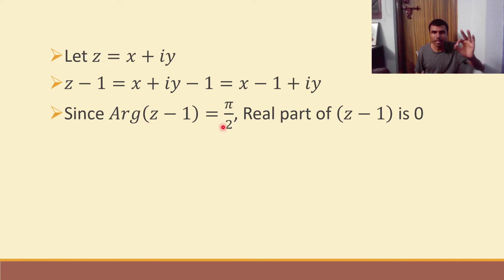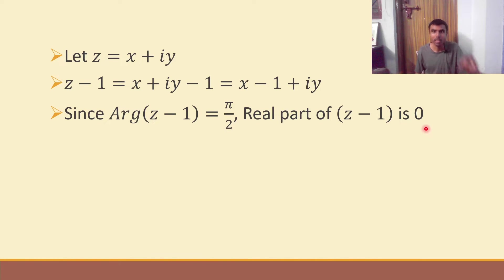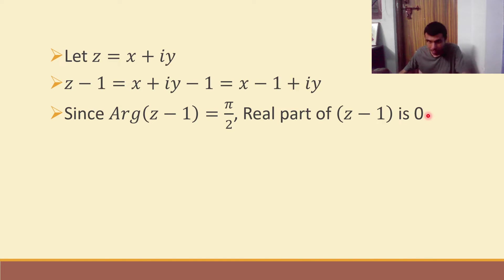Argument of z minus 1 is pi by 2, which means the real part of z minus 1 is 0. Now listen carefully, for that you have to understand some basics.